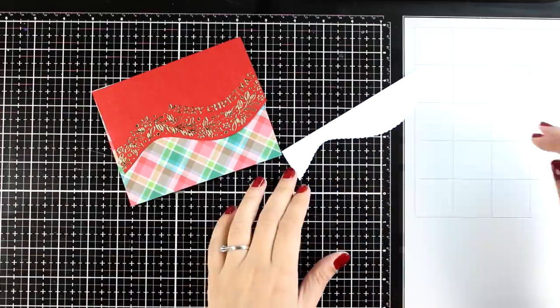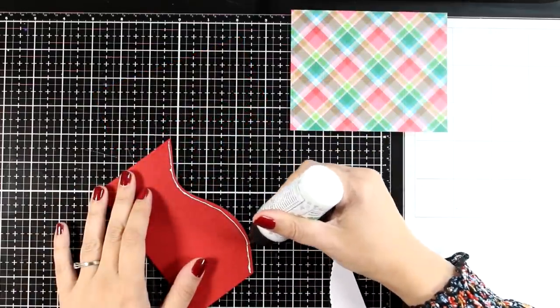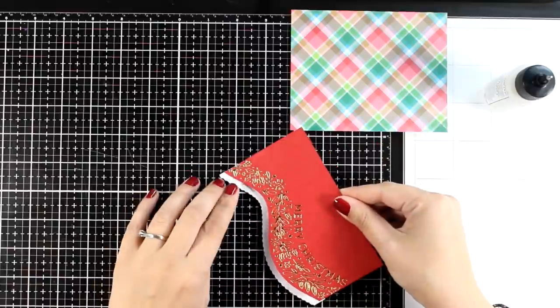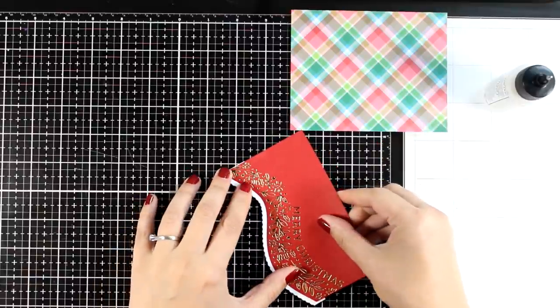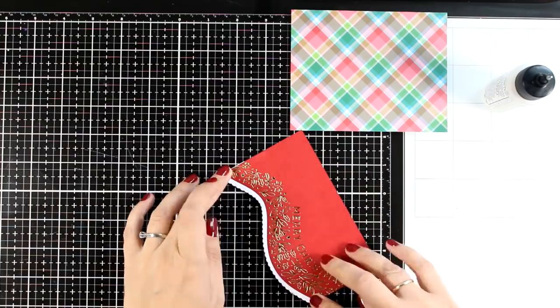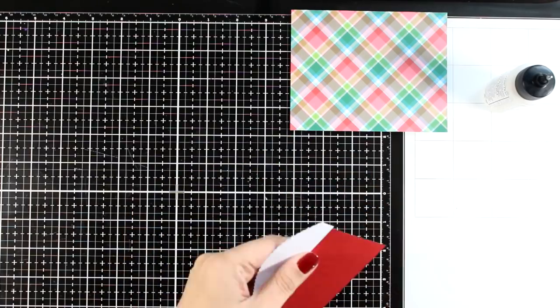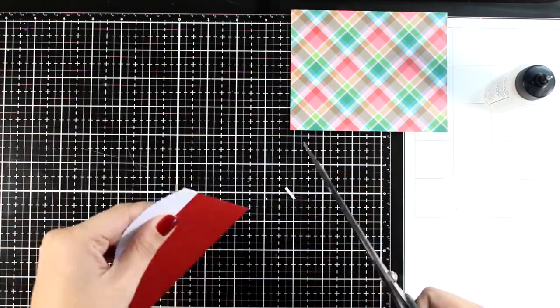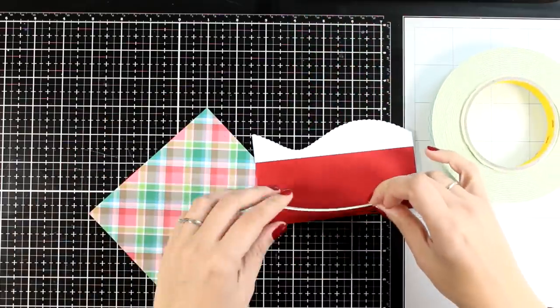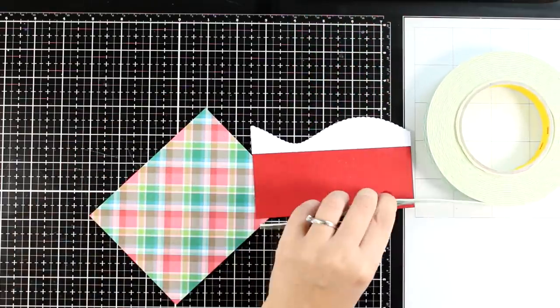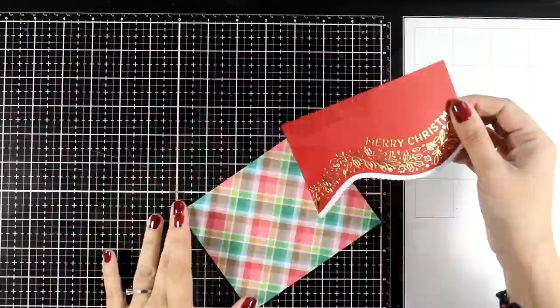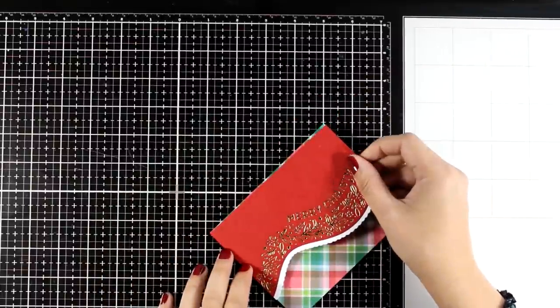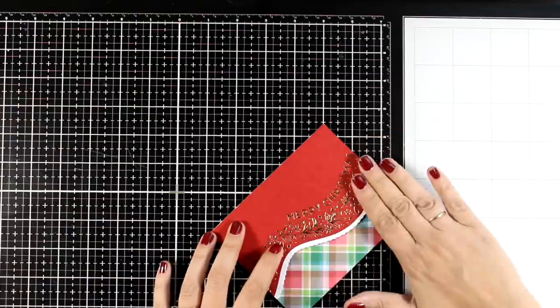The card already looks stunning as it is, however I'm going to take it a step further. I used one of the dies from the set that gives you that decorative edge that has scallop details. And of course it follows the same curve, so I'm going to stick it underneath and it's going to give a lovely definition to that curve so that it stands out even better. I'm going to add some foam tape at the back, stick it on top of my pattern paper.